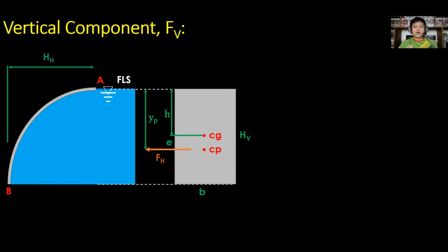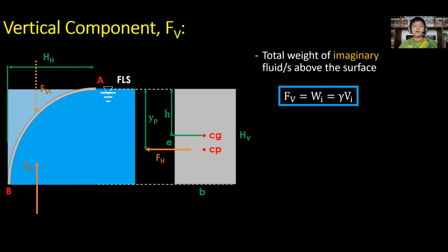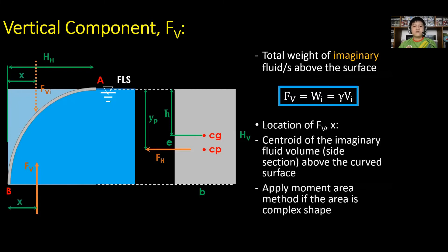For the vertical component F sub V, consider the weight of the imaginary fluid above the surface. Thus, F sub V is equal to gamma times V sub I, where gamma is the unit weight of the fluid and V sub I is the imaginary volume of fluid above the surface, in line with the free liquid surface. For the location X, consider the centroid of the imaginary fluid above the curved surface.